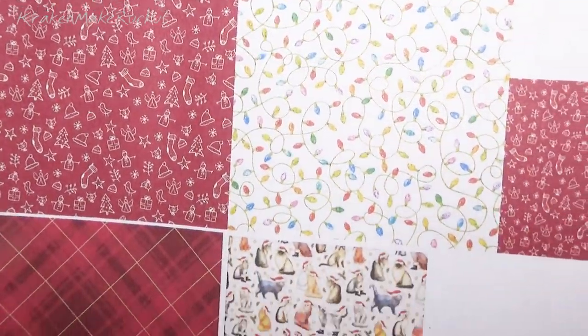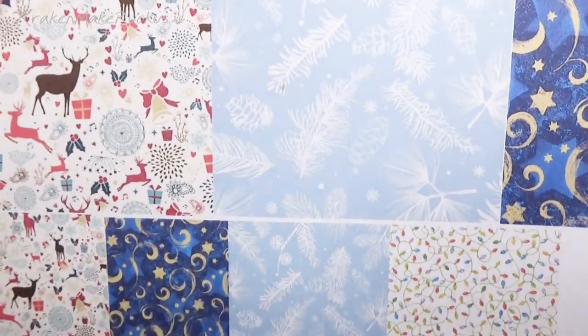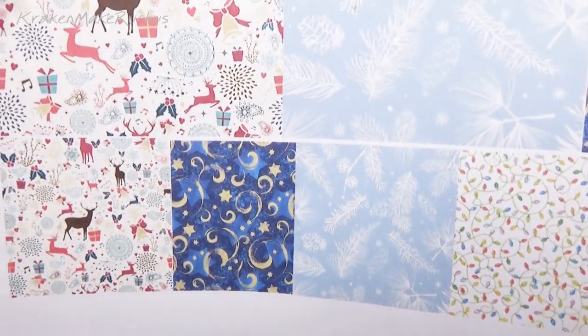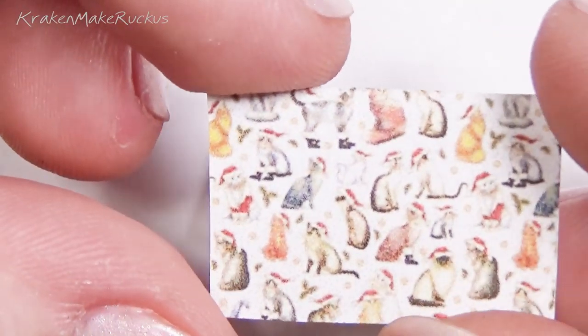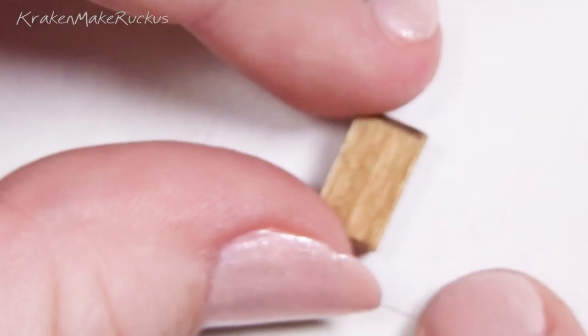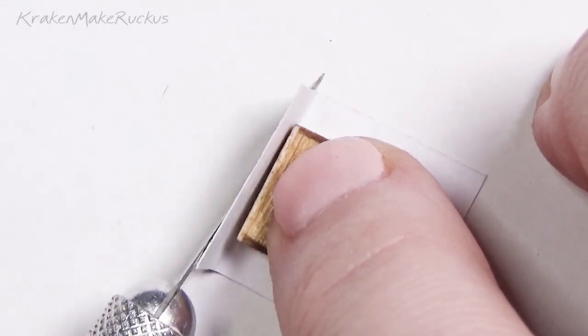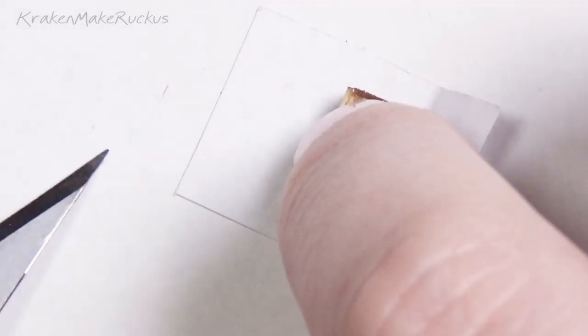I printed out different types of Christmas wrapping paper, scaled them down in word, cut them out, and wrapped each box individually for them to unwrap in person. Wrapping the boxes was actually pretty easy. It just takes finesse and a little bit of patience to wait for the glue to dry completely, so that the paper is as flat as possible.